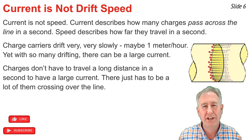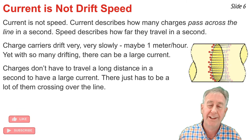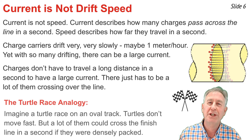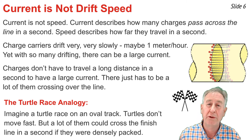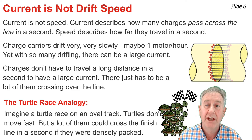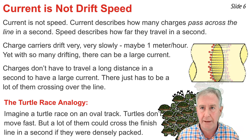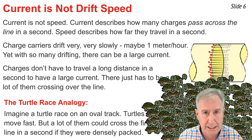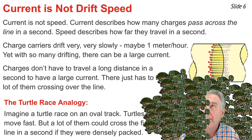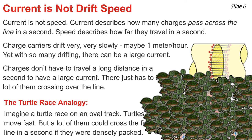Let's use a racing analogy to illustrate the difference between drift speed and current. Let's imagine a turtle race occurring on an oval track. Turtles do not travel very fast. Yet, if we had a lot of them lined up, densely lined up, next to the finish line, really densely lined up, then a lot of them could cross over that finish line in a second of time. That would be a situation where you'd have a large current, but a small drift speed.